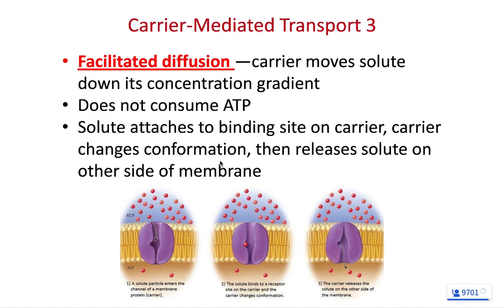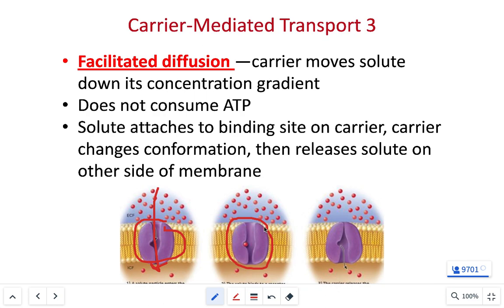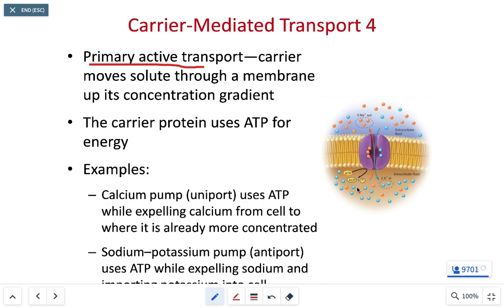Facilitated diffusion is just a molecule that needs a protein to help it across the membrane. That molecule can go directly through the membrane with its transporter helping it get through. Facilitated diffusion does not require the input of ATP — it is a passive process powered only by concentration gradients. Primary active transport, like the sodium-potassium pump, uses ATP directly on the pump to move sodium and potassium ions against their concentration gradients.